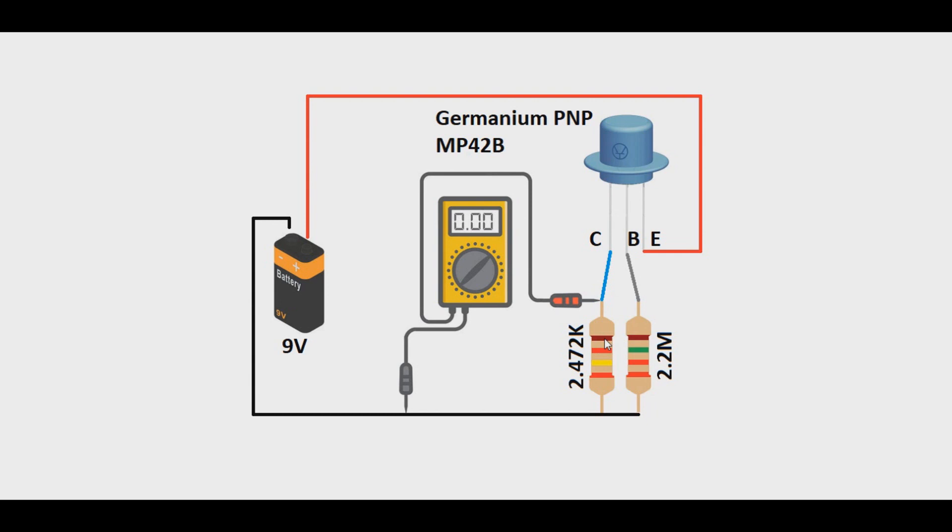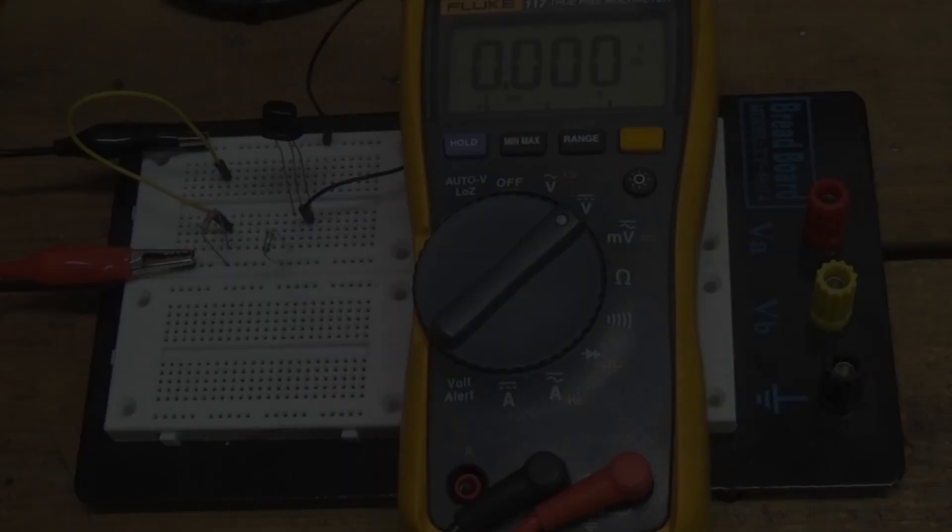So our germanium PNP transistor, we measured the voltage across the collector resistor at 0.963 volts, meaning we would have a gain of 96.3 if there wasn't any leakage. However, we know this transistor did have leakage, so we need to subtract it. So the true gain is calculated by going 0.963 volts minus 0.346 volts, that leakage that we got from the calculations earlier, and that equals 0.617 volts, or a gain of 61.7. So that's what we got with this germanium PNP transistor.